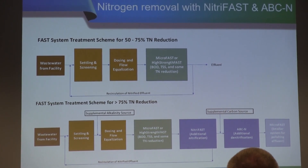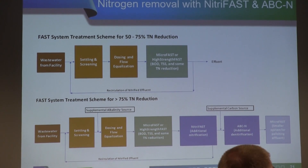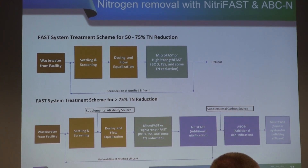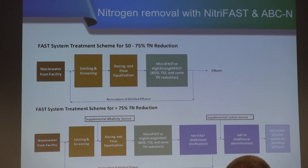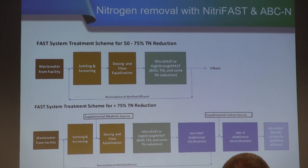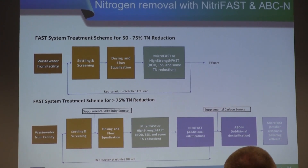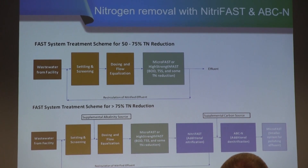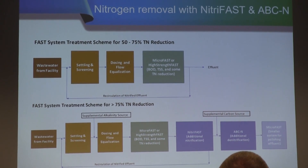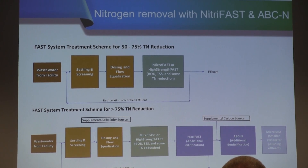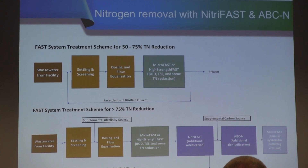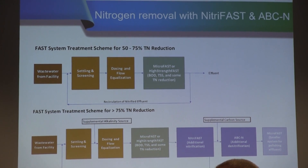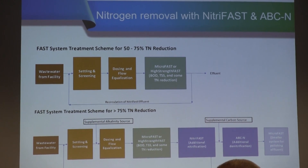When you need a higher percentage removal of total nitrogen, that's when NitroFAST and ABCN come into play. The treatment train below shows all the same steps as above, but now adds a NitroFAST step for complete nitrification, then that nitrified wastewater goes through the ABCN for denitrification — a post-anoxic process. The recirculation step is still there, placed right after the NitroFAST, not after the ABCN.